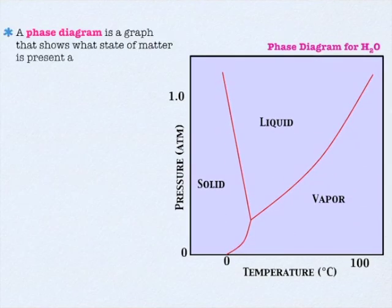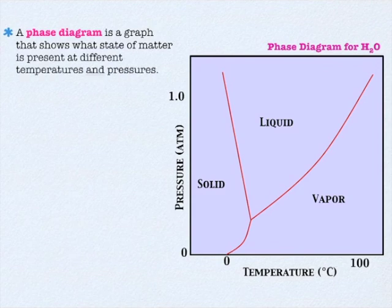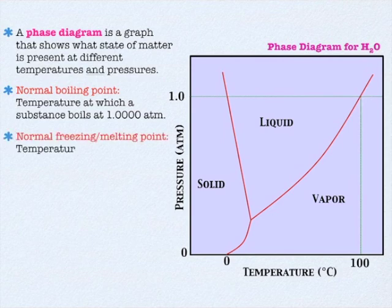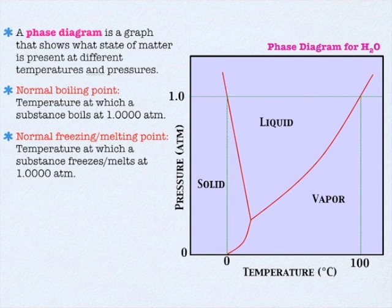The last thing to cover is the idea of a phase diagram. You've actually seen this before, but only a slice of it. Typically when we think about water, we think about the boiling and freezing point at one atmosphere — at normal atmospheric pressure, water freezes at zero and boils at 100 degrees Celsius. But hopefully you realize now that the boiling point is totally dependent on pressure. If the pressure changes, the boiling point and the freezing point will change, and that's what a phase diagram represents.